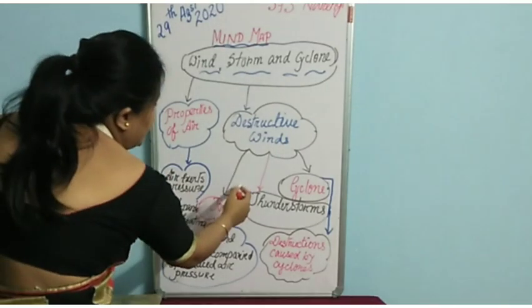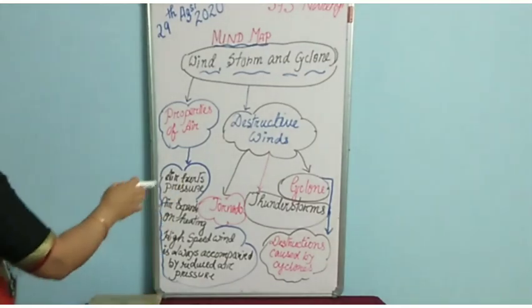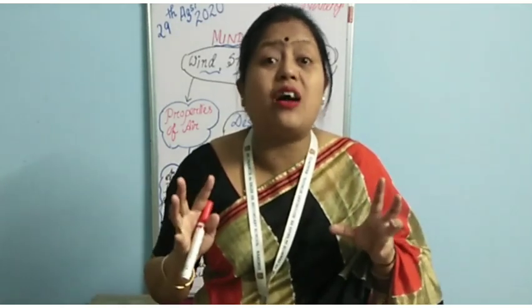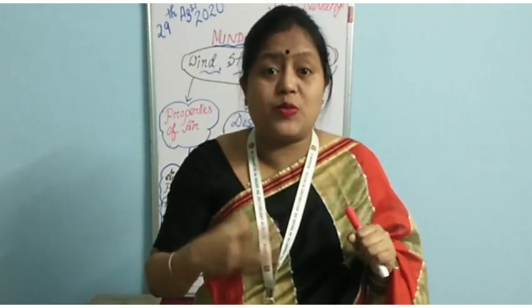We first discussed thunderstorms. As the name suggests, thunderstorms are destructive winds accompanied by lightning and sound. They occur due to the collision between charged particles — which you will study in more detail in higher classes. Thunderstorm occurs due to pressure difference and the collision between charged particles, producing sound and lightning.